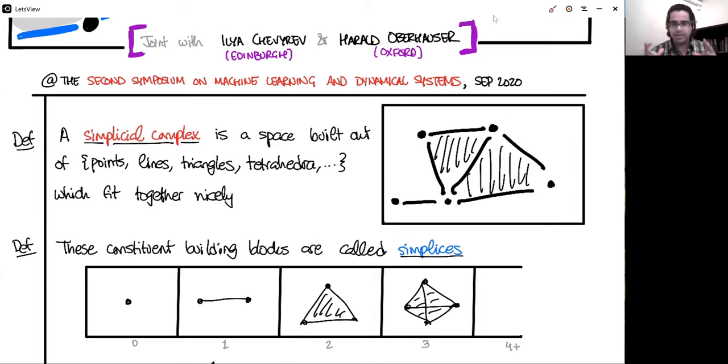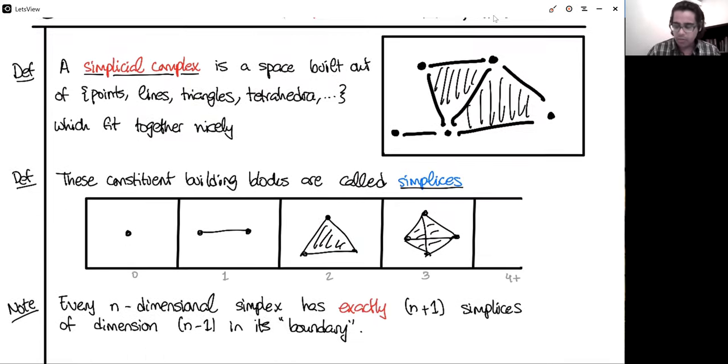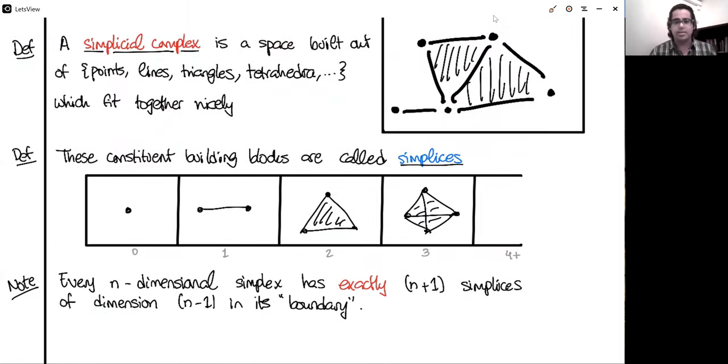So you build these spaces, these chunky discrete spaces out of simplicies of all sorts of dimensions. And you realize very quickly that there are some combinatorial relations satisfied by how these simplicies are assembled. In particular, every edge has two vertices in its boundary. Every triangle has three edges in its boundary. Every tetrahedron has four triangles in its boundary. And so there's a nice general formula where every n-dimensional simplex has exactly n+1 simplicies of dimension n-1 in its boundary.